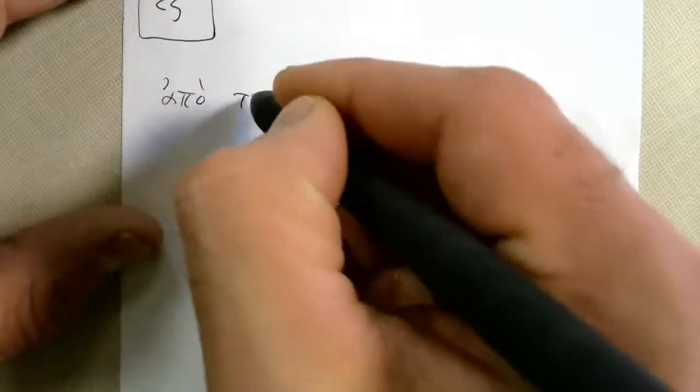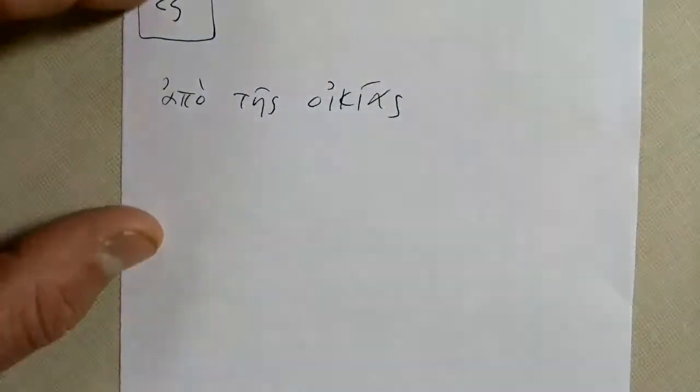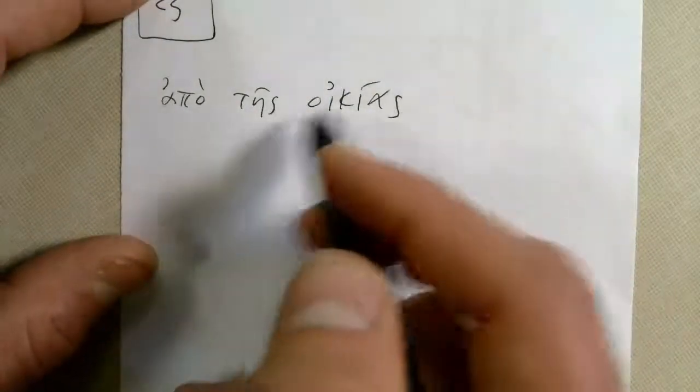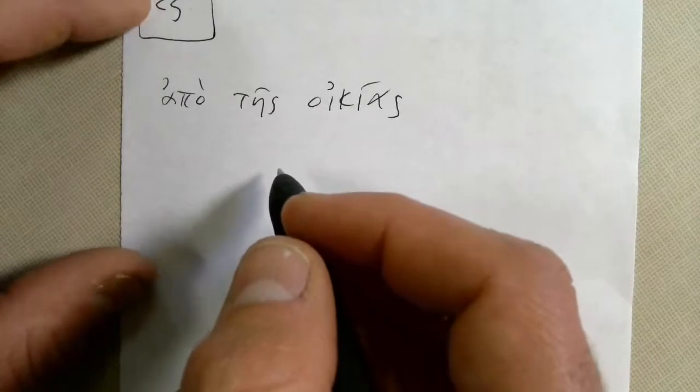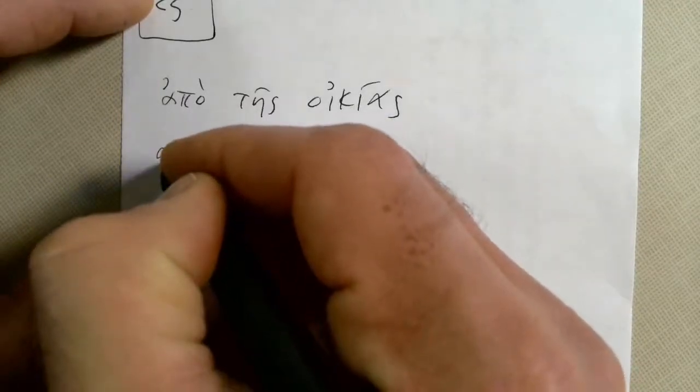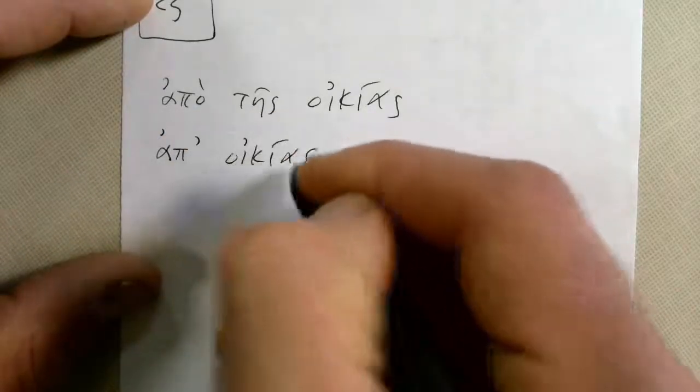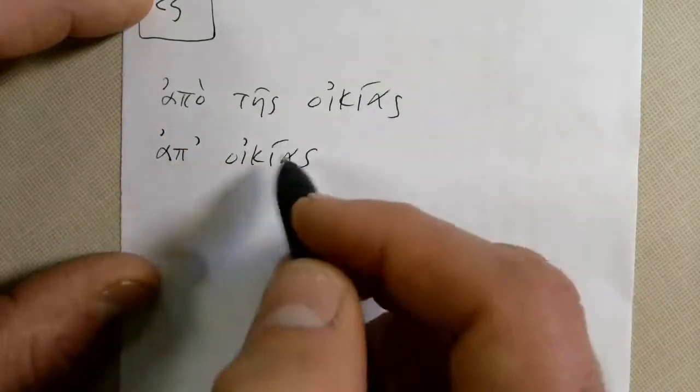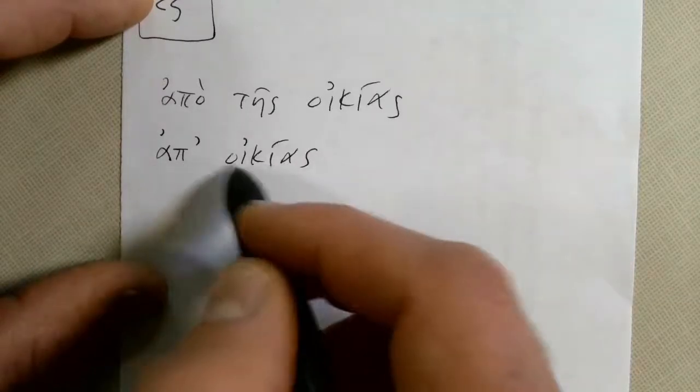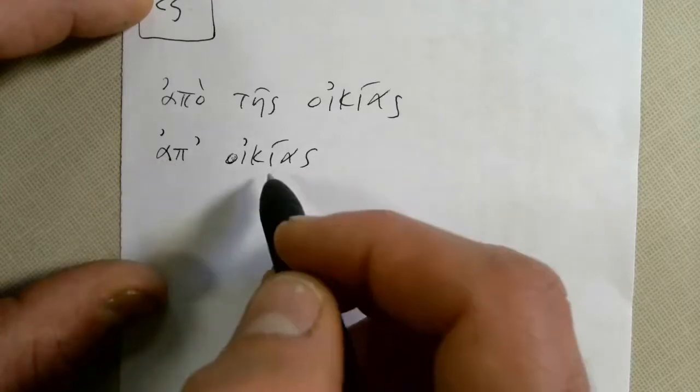Apo tis ikiyas. Apo tis ikiyas, away from the house. Apo tis ikiyas. Now you could say apo ikiyas, away from a house. From a house, away from a house. Notice it changed to Ap. Away from a house. Apo tis ikiyas.